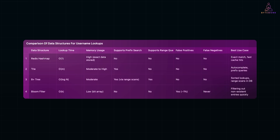Here is a clear comparison table of the data structures we have discussed: Redis HashMap, Trie, B+ Trees, and Bloom Filter — highlighting their performance, memory usage, and best use cases in large-scale username lookups. So far, we have explored the individual building blocks from HashMap to Tries, B+ Trees, and Bloom Filters, each with their own strengths and trade-offs.